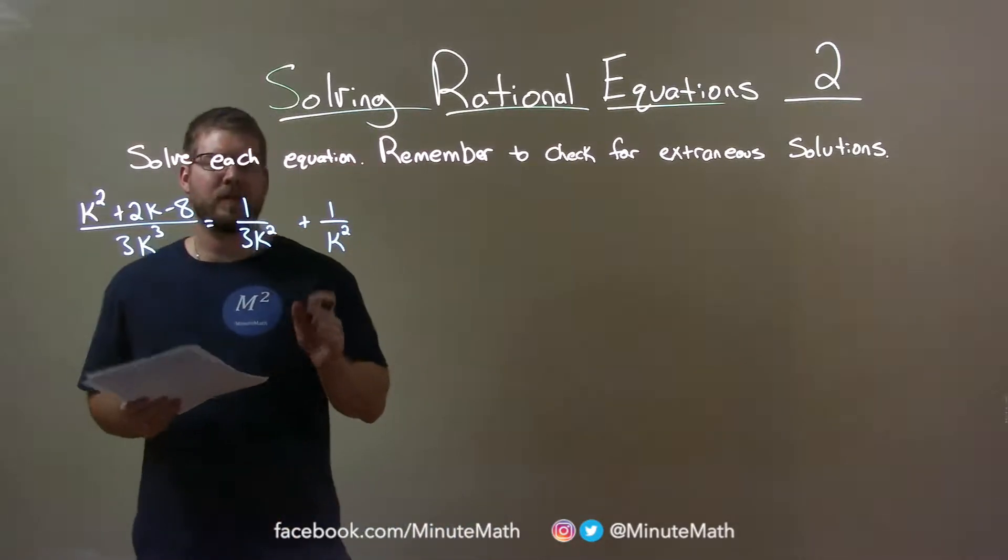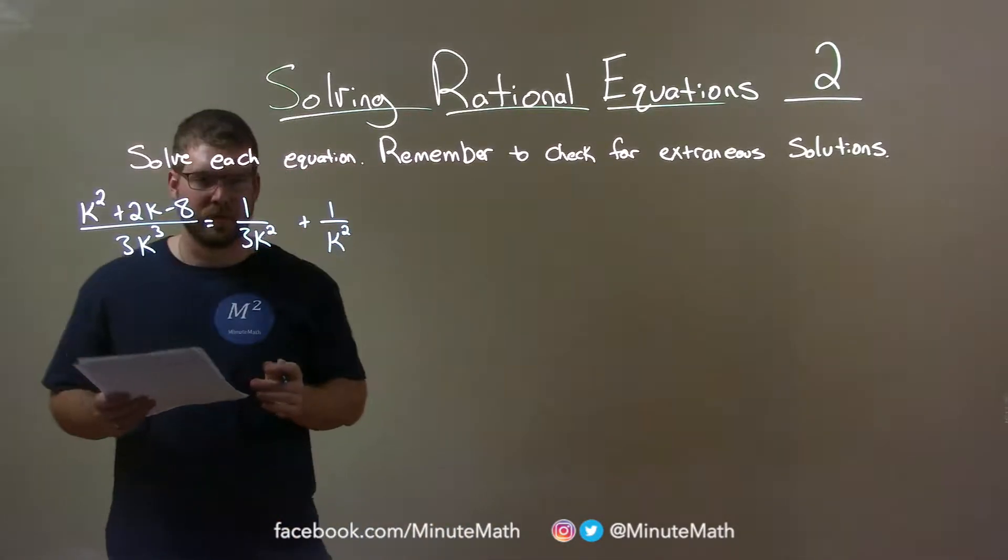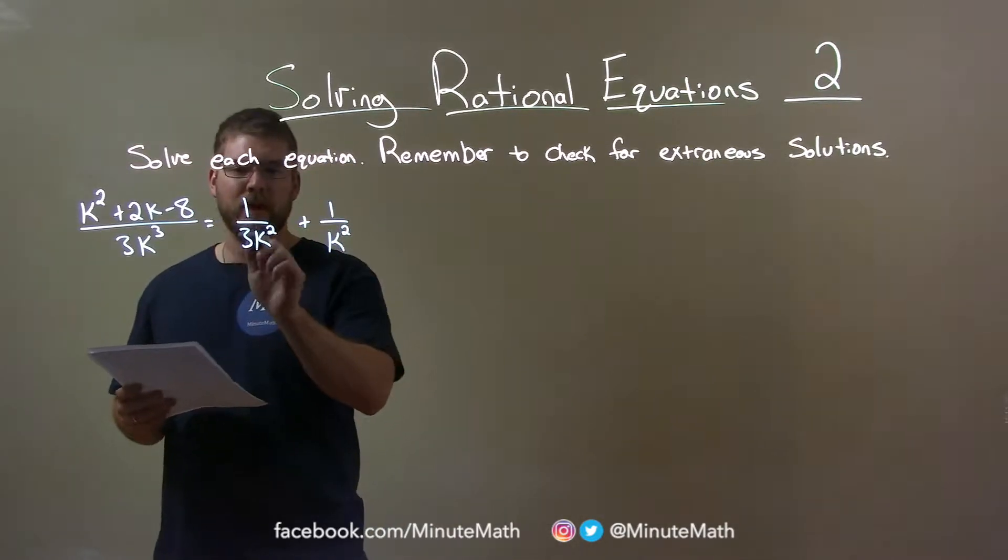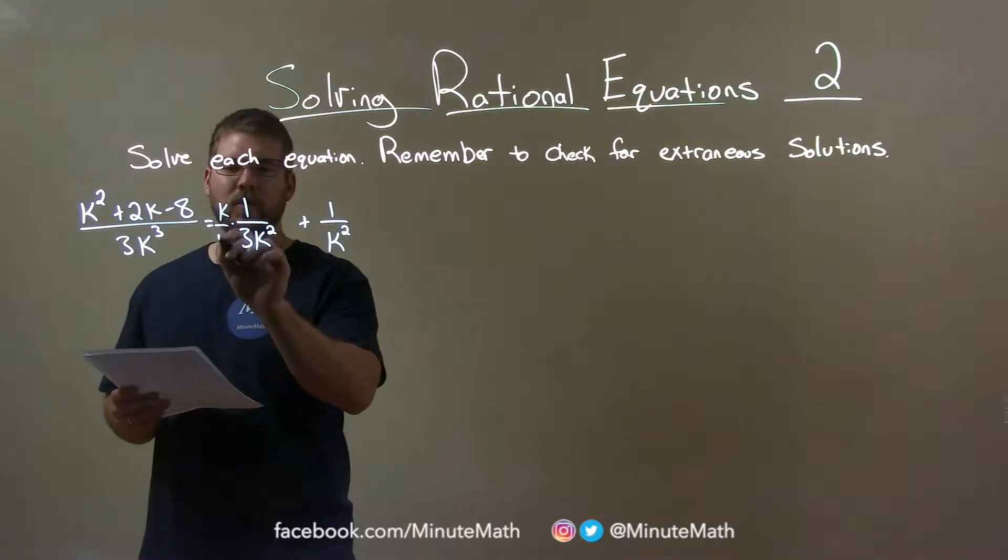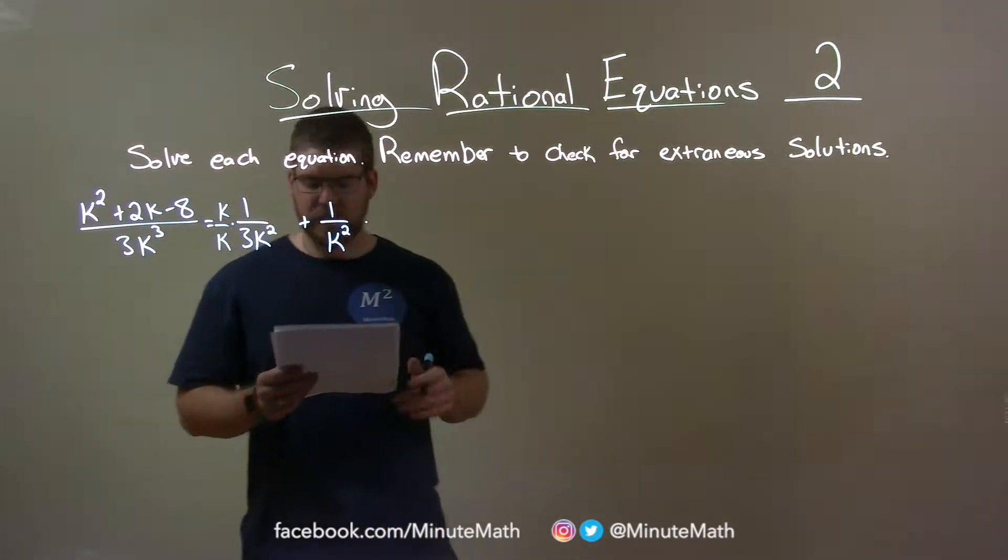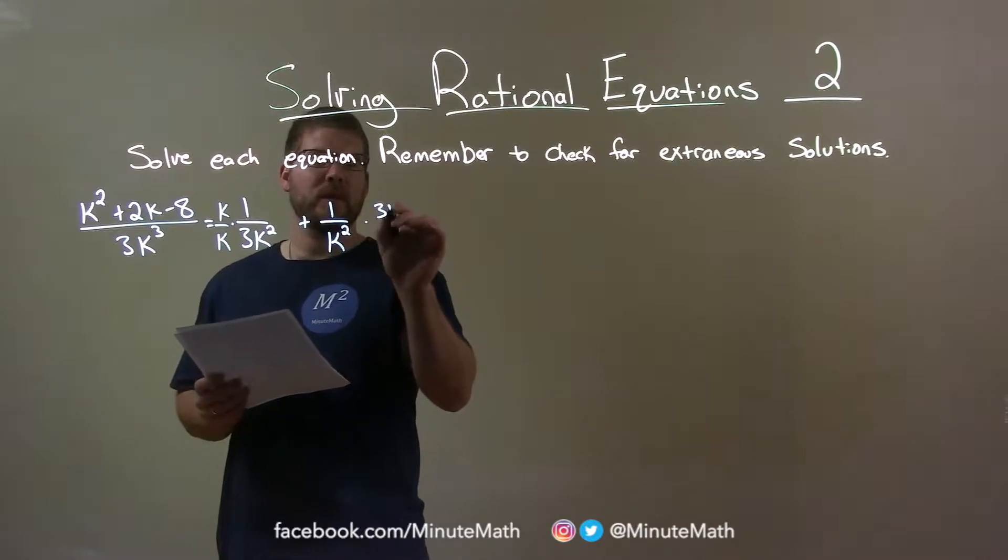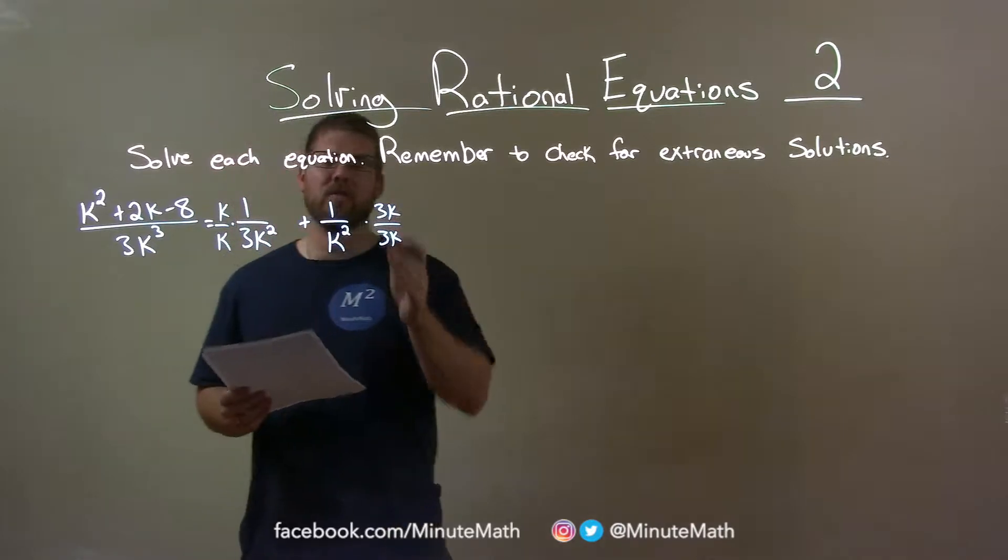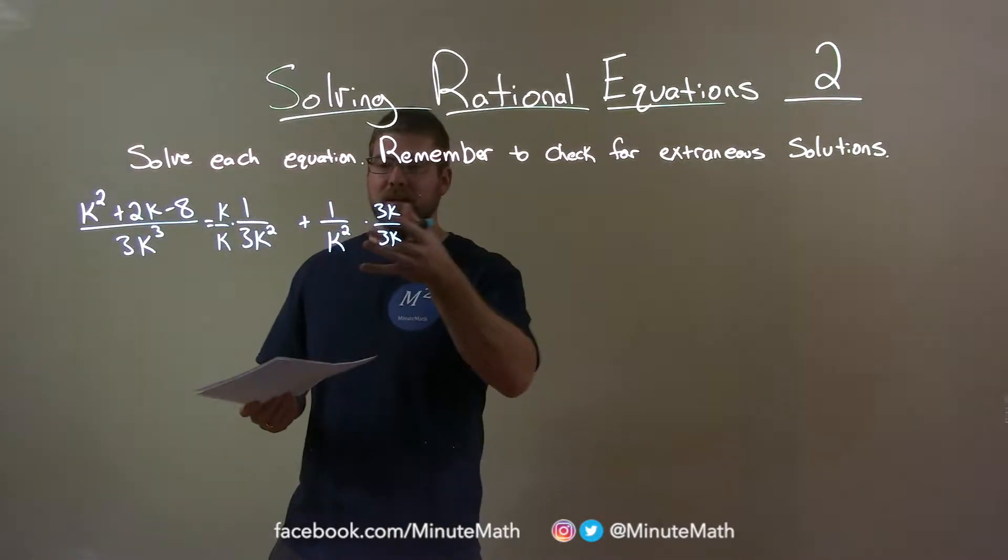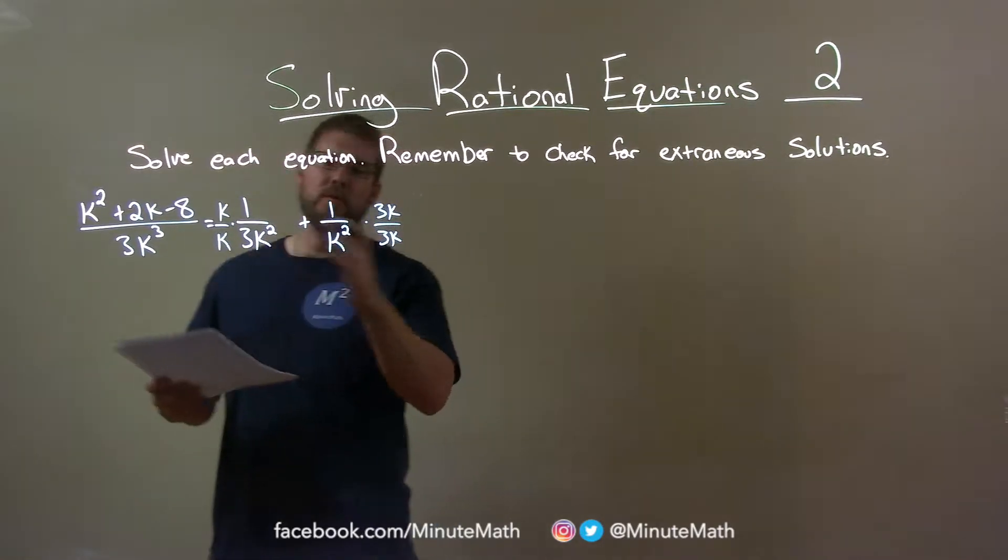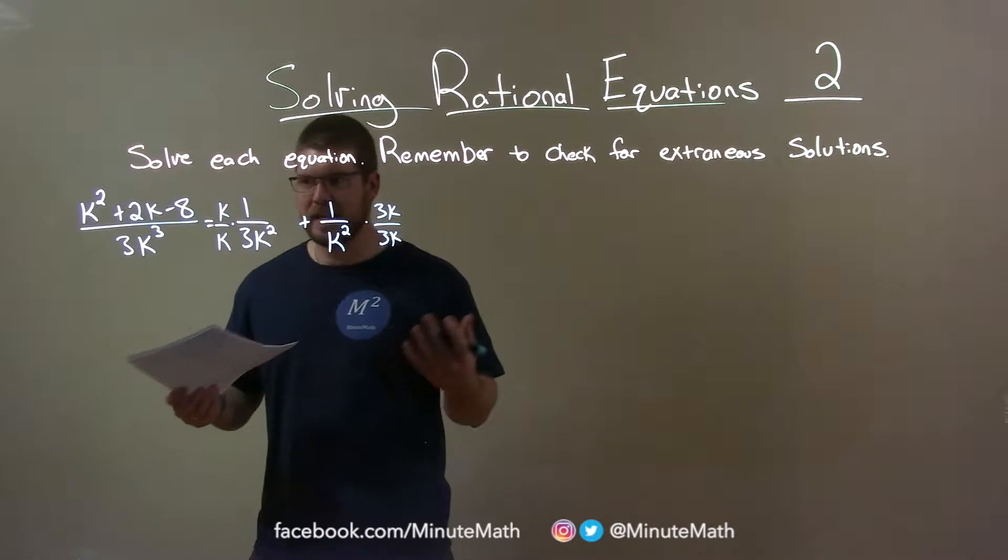Well, one thing I want to have is the same denominator across the board. We have 3k to the third power. So if I multiply this first one here by k over k, our denominator becomes 3k to the third power. The second part here, the last part here, if I multiply this by 3k over 3k. The reason why we multiply the same thing over itself, because that's essentially 1, doesn't change the problem. 3k times k squared is 3k to the third power.